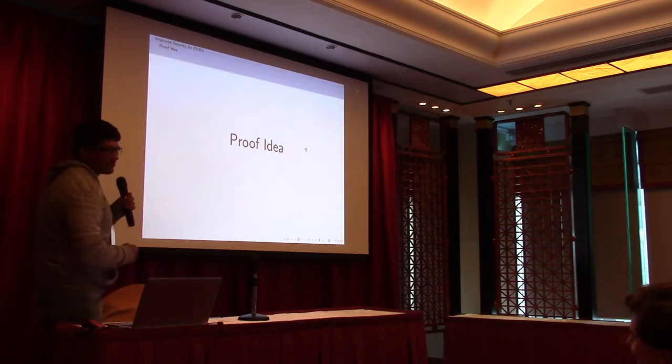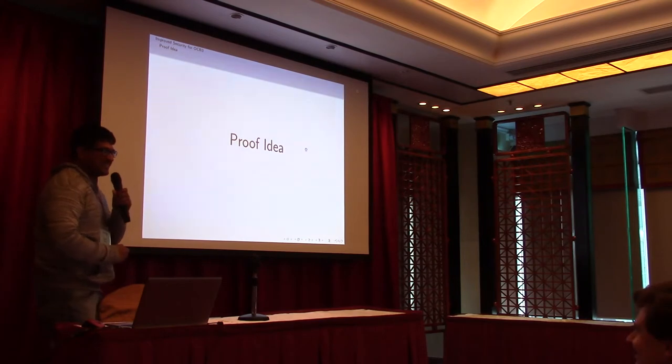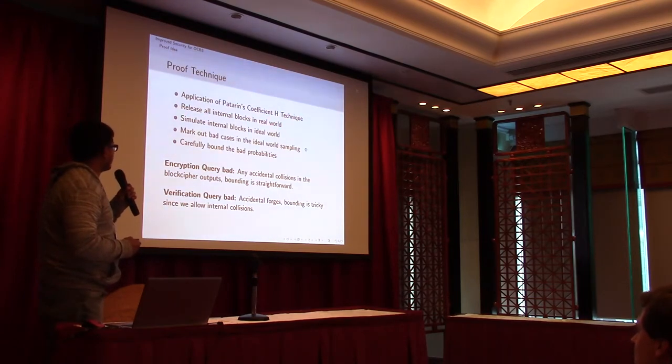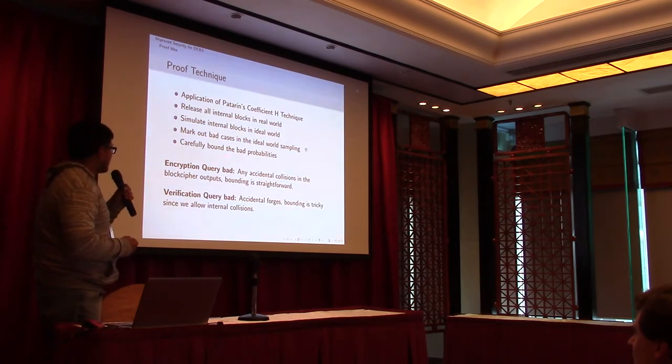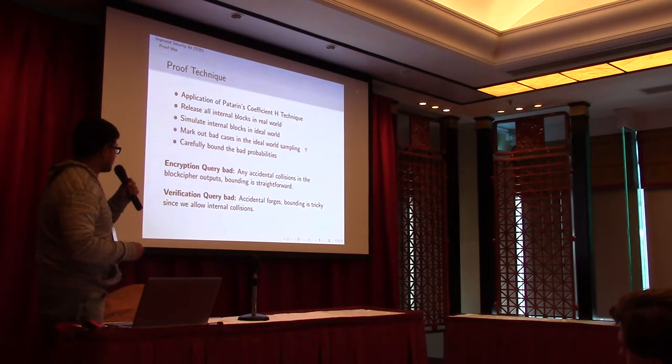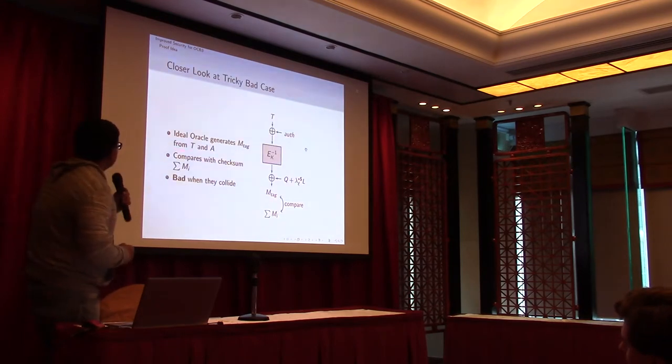So it looks like we have enough time to go over the proof idea. So overall proof idea is kind of simple. It's the application of Patarin's coefficient H technique. We release all internal blocks in real world and simulate internal blocks in ideal world. We will mark out the bad cases in the ideal world sampling and carefully bound the bad probabilities. So this is how almost all the proofs in this type of area work. The first step is encryption queries go back. So any accidental collisions in these queries, this bounding is straightforward because we are not hoping to get something new. We are only aiming for this step to be straightforward. For verification queries, bounding is not straightforward because here we want to get improved bounds. Accidental collision bounding is straightforward since we are releasing the internal conditions.